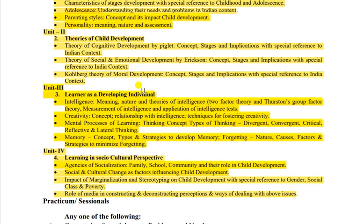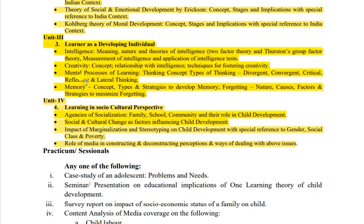Unit 2 se baat karein - teen theorists hain, teeno ki theories di hui hain. Teeno mein se do pe question aayenge, ek skip kar diya jaayega - do mein se kisi ek pe aapko karna hai. Agar aap shortcut method se padhna chahte hain toh kisi bhi do theories ko aap study kar sakte hain, ek skip kar sakte hain - although na karein, I never recommend that to many students.